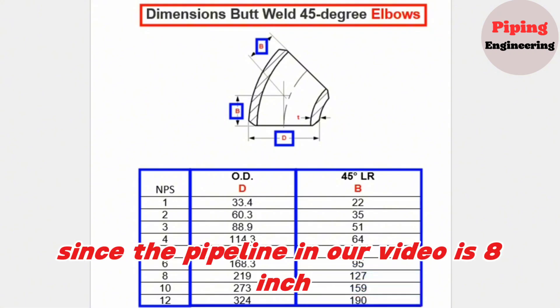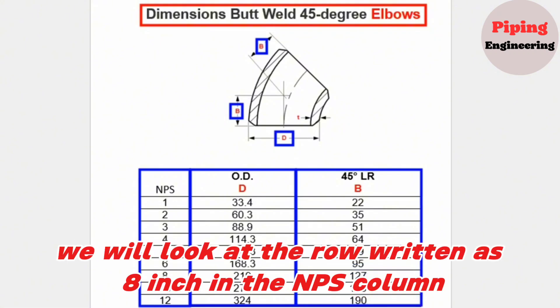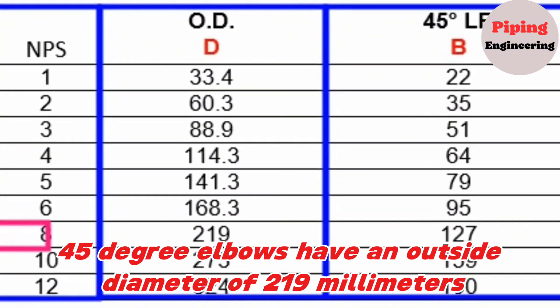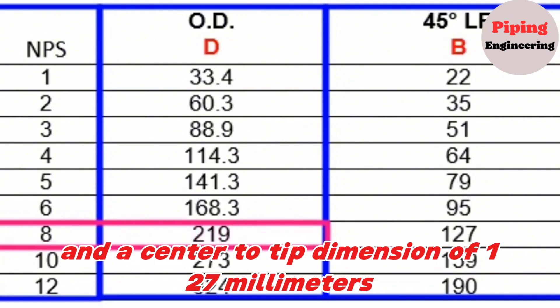Since the pipeline in our video is 8-inch, we will look at the row written as 8-inch in the NPS column. This table shows that 8-inch butt welded 45-degree elbows have an outside diameter of 219 millimeters and a center to tip dimension of 127 millimeters.